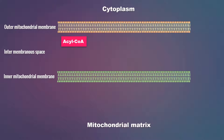This acyl-CoA cannot be transported through the inner mitochondrial membrane, so for that we require a transport shuttle provided by carnitine. Carnitine is synthesized by the liver and kidney, and its synthesis requires two amino acids — lysine and methionine — and ascorbic acid, or vitamin C, is also very much essential for the synthesis of carnitine.